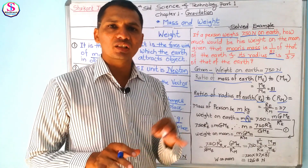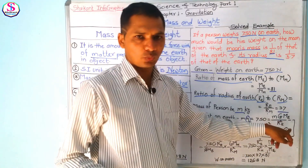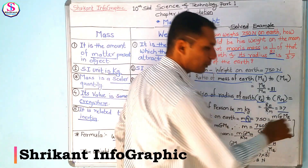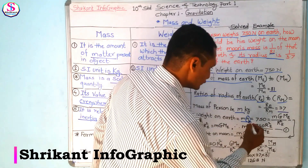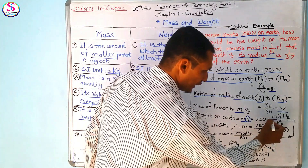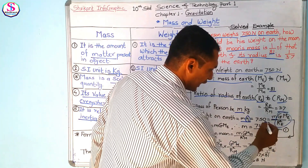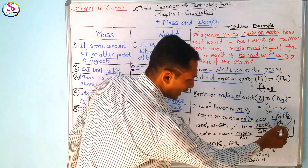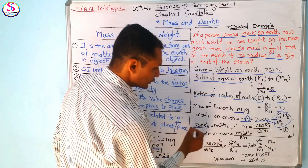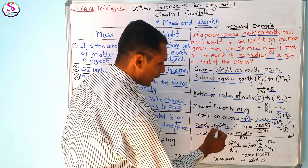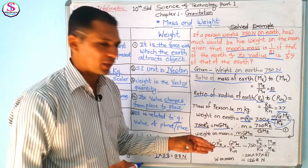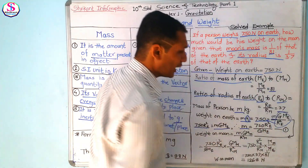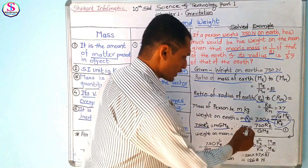The value of g is the gravitational acceleration, equal to GM divided by R squared. We apply the law of gravitation. So mg on earth equals 750 N. We calculate mass as 750 times R squared_E divided by G times M_E. Then using the ratio R_E to R_M equals 3.7 and M_M to M_E equals 1/81, we substitute to find the weight on the moon.